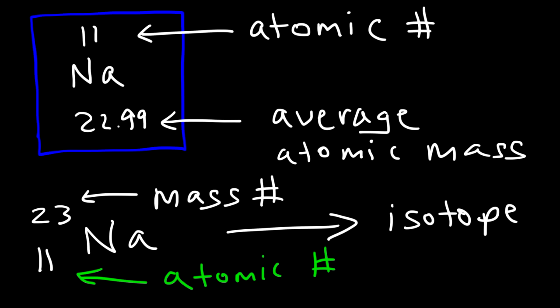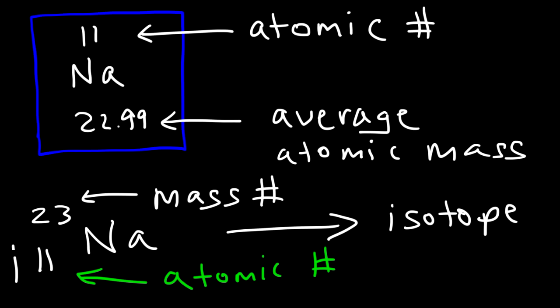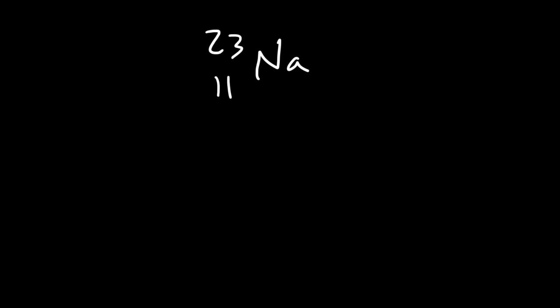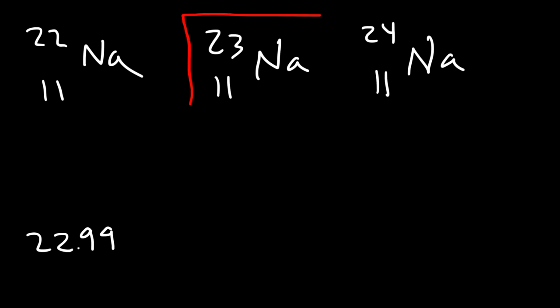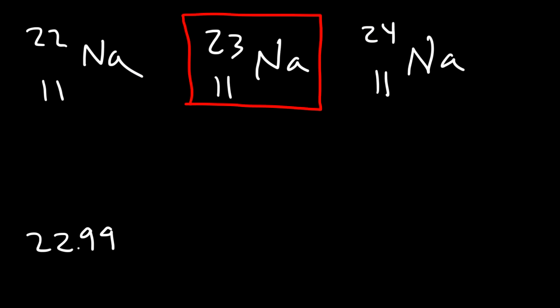If you average all of the isotopes of sodium on Earth, you're going to get this number. So because that number is close to 23, this is the most abundant isotope of sodium on Earth. In addition to sodium-23, you also have sodium-24, and there's also sodium-22. The other forms of sodium are not stable and not very common, but these are other isotopes of sodium.